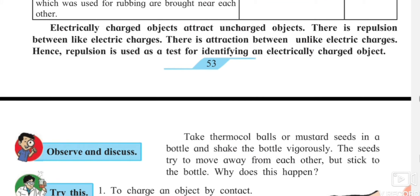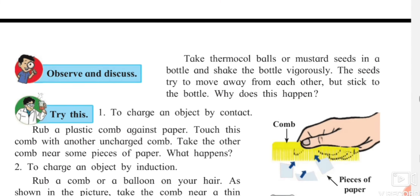Electrically charged objects attract uncharged objects. Just as positive and negative charges attract each other, charged objects attract uncharged ones, and uncharged objects are attracted to charged ones. There is repulsion between two same electric charges, and attraction between unlike charges — positive and negative come together. Repulsion is one test for identifying an electrically charged object.